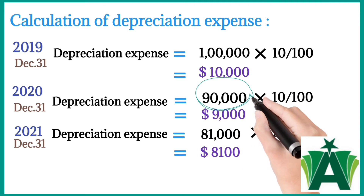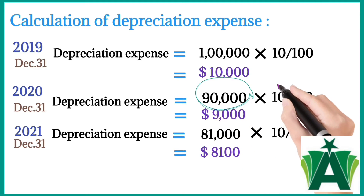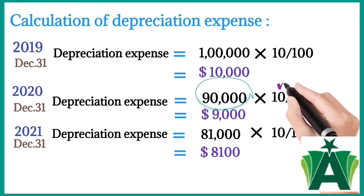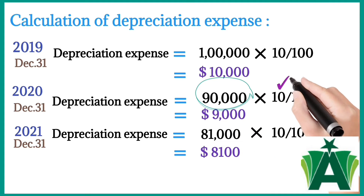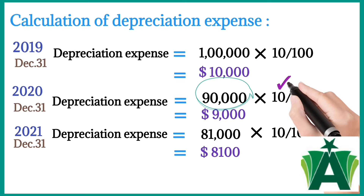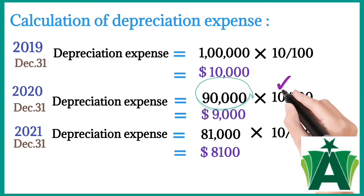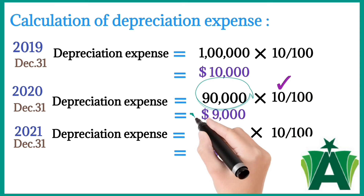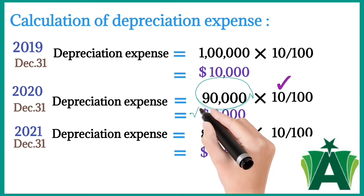At the end of 2020, December 31st, depreciation is calculated on the opening balance of machinery: 90,000 multiplied by 10 divided by 100. The amount of depreciation is 9,000.